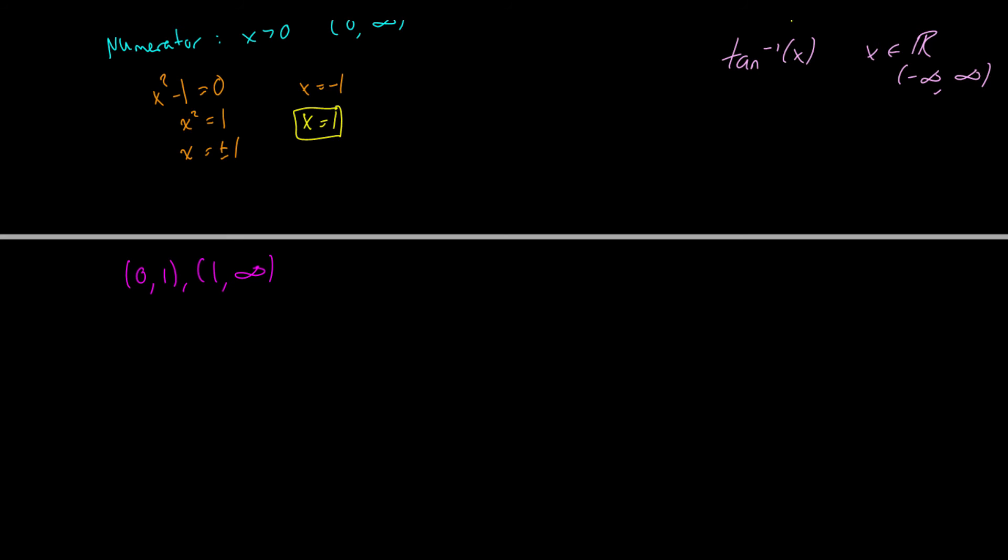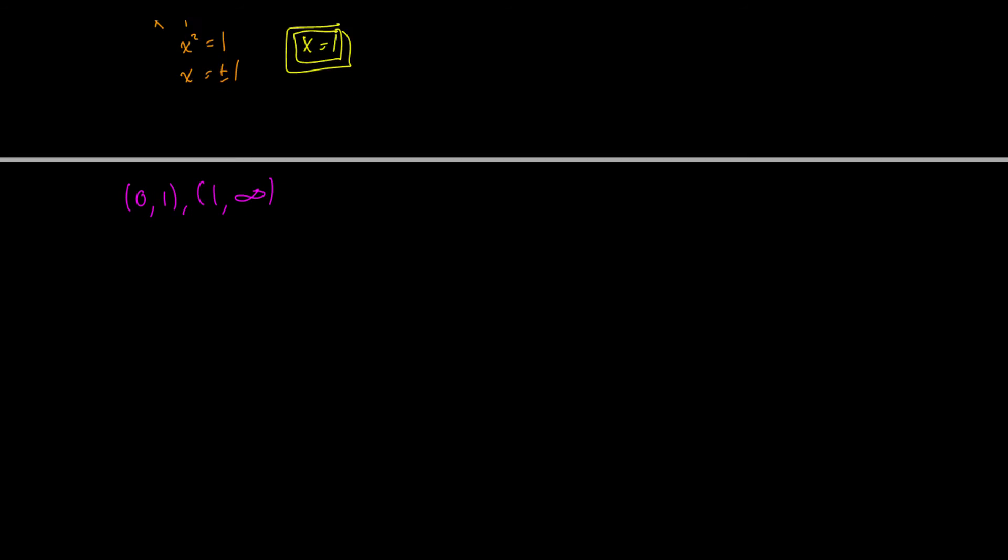Therefore we have a domain of the function where it is continuous from zero to one and one to infinity. And why? Because we can't include one because it's not defined at one. It's not continuous at one and it is continuous everywhere else thanks to our numerator. So that can be pretty difficult. You can check on wolframalpha.com graph the function which also helps a lot and we can jump right into a practice problem.